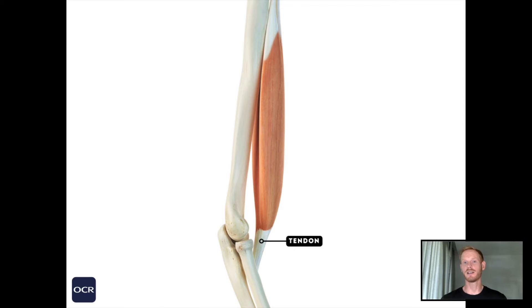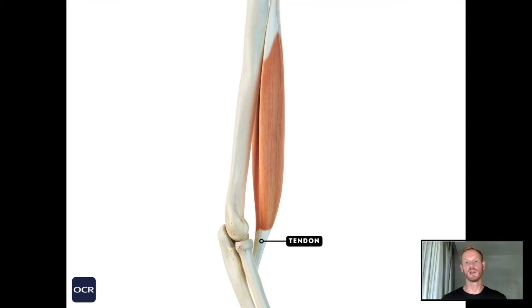For example, as the bicep muscle contracts, it transfers force to the tendon which is attached to the radius in the forearm, and this produces flexion, or a bending movement, at the elbow joint.